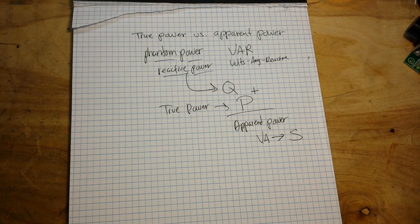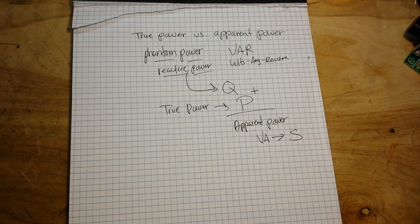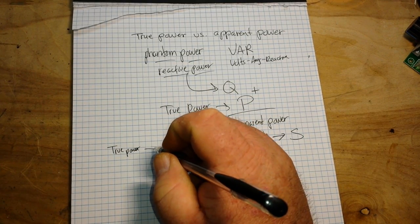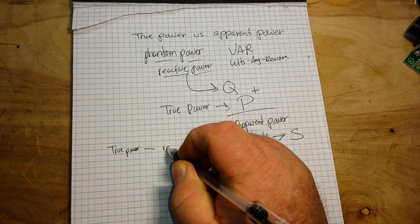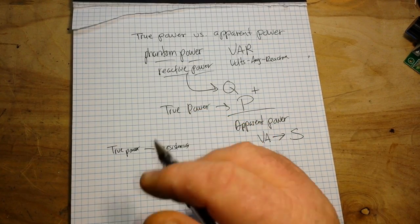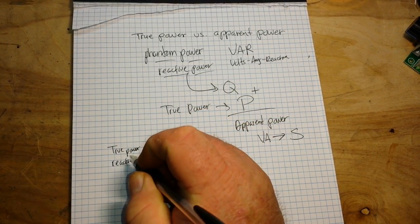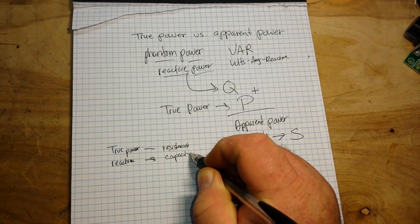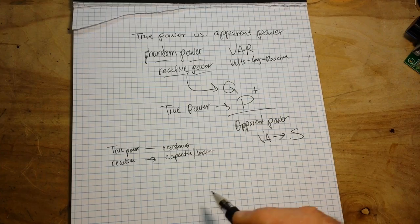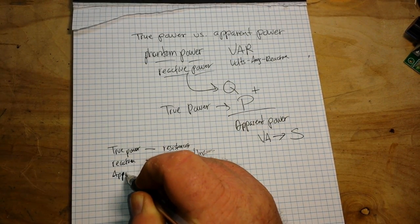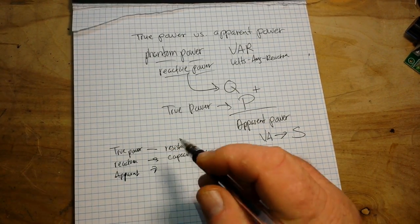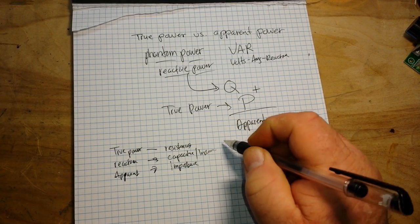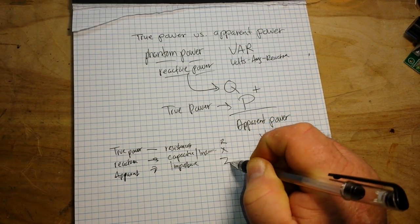We're just going to whip out the entire alphabet here tonight, aren't we? Think about three rules. They're not hard and fast, any rules can be broken, but if we think about three rules, they can help us out. True power is a function of current and dissipative elements, usually resistances. Reactive power is usually a function of a circuit's reactance, and we'll call that capacitive and inductive. And then we finally have our apparent power, and that apparent power is usually a circuit's impedance.